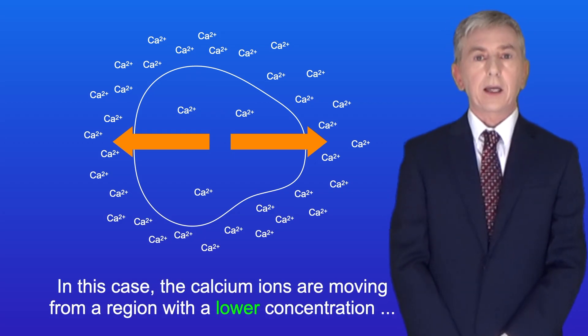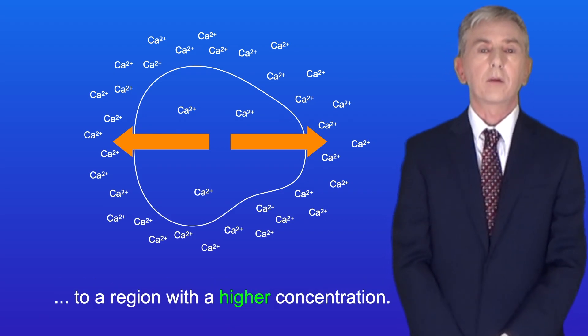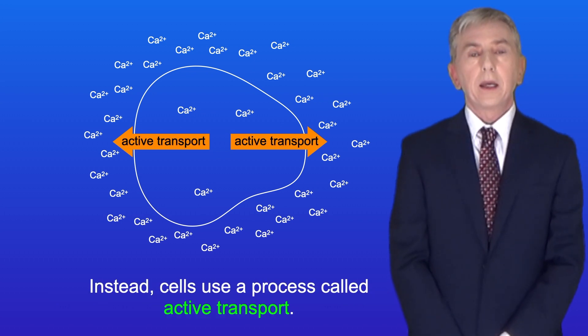Now in this case, the calcium ions are moving from a region with a lower concentration to a region with a higher concentration. So clearly this cannot take place by diffusion. Instead, cells use a process called active transport.